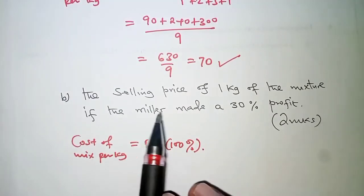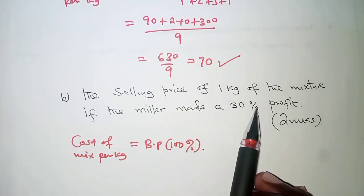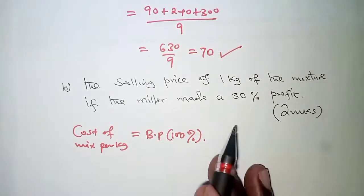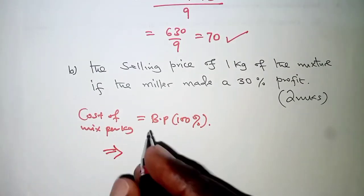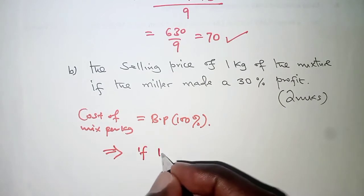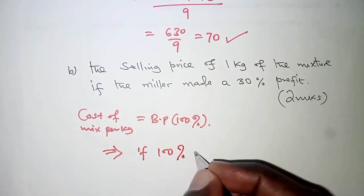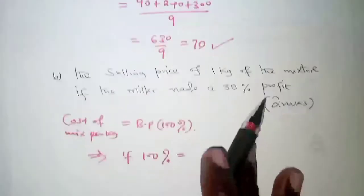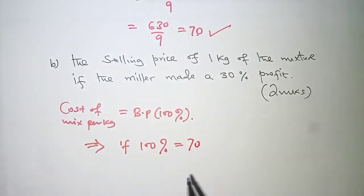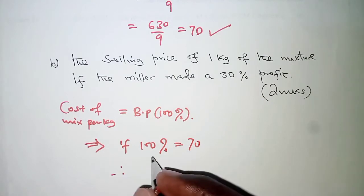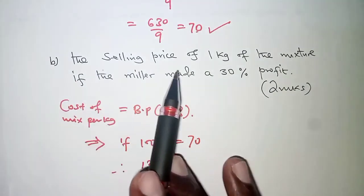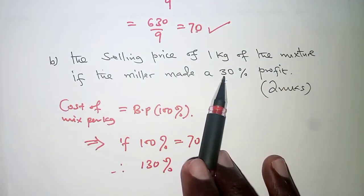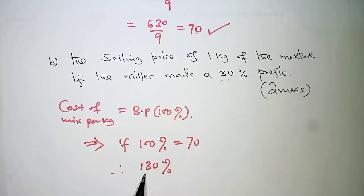Therefore, if the miller sold and made a profit of 30%, then what is the selling price? We will therefore say, so this implies that if 100% for the buying price is the cost of the mixture, which is 70 shillings, how about 130%? Remember, when sold, a profit of 30% was made. So that is how we get 130.